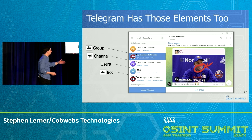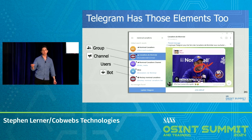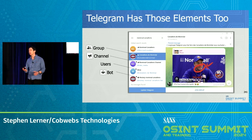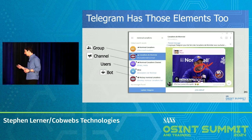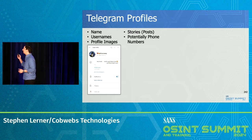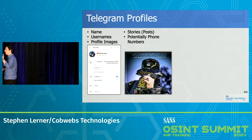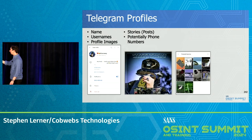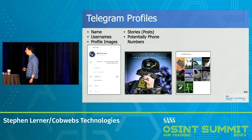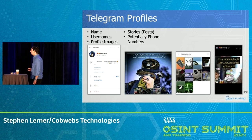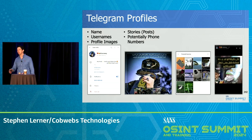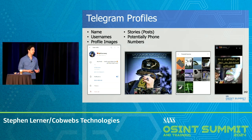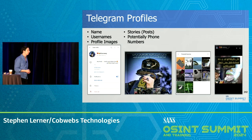Bots are these mini apps or programs built into Telegram itself. It's got names, usernames, profile images, and bios. It's got stories like we see on other platforms, and there's potentially phone numbers people post. There's a lot of information that people have on themselves that we can use to investigate them.